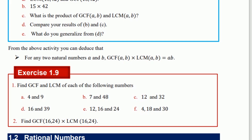For any natural numbers A and B, the greatest common factor of A and B, times the least common multiple of A and B, equals A times B.